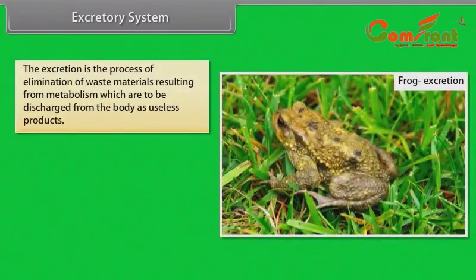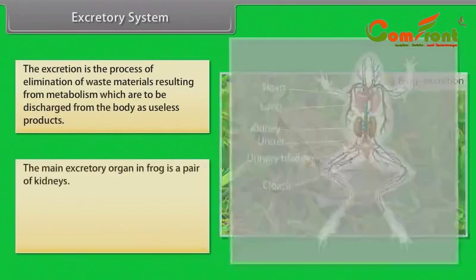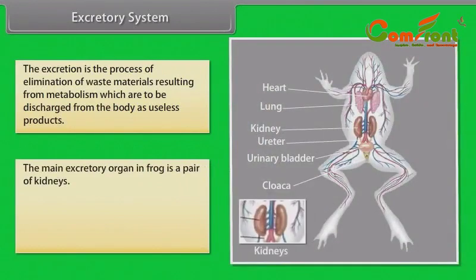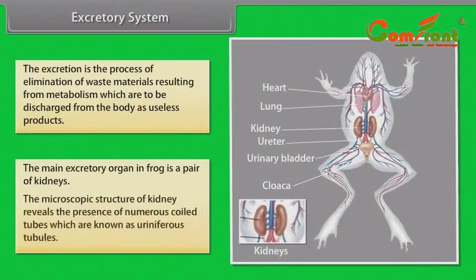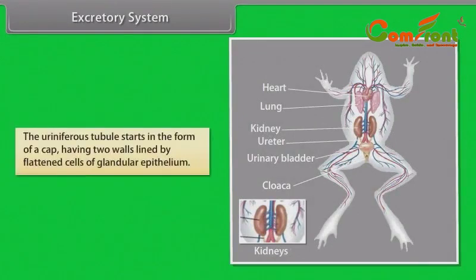Excretory System: Excretion is the process of elimination of waste materials resulting from metabolism. The main excretory organ in the frog is a pair of kidneys. The microscopic structure of the kidney reveals numerous coiled tubes known as uriniferous tubules. The uriniferous tubules start in the form of a cap having two walls lined by flattened cells of glandular epithelium.